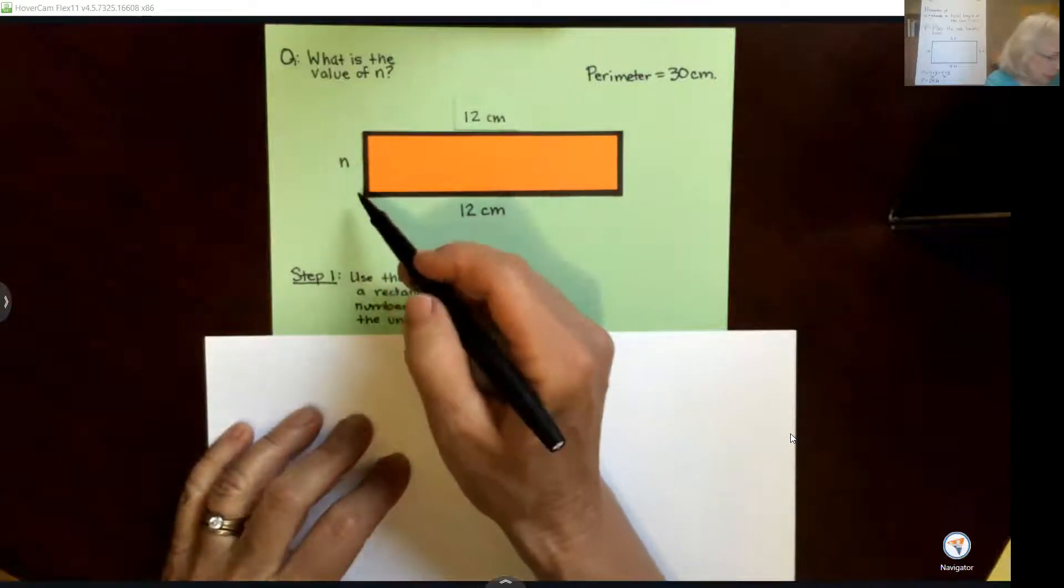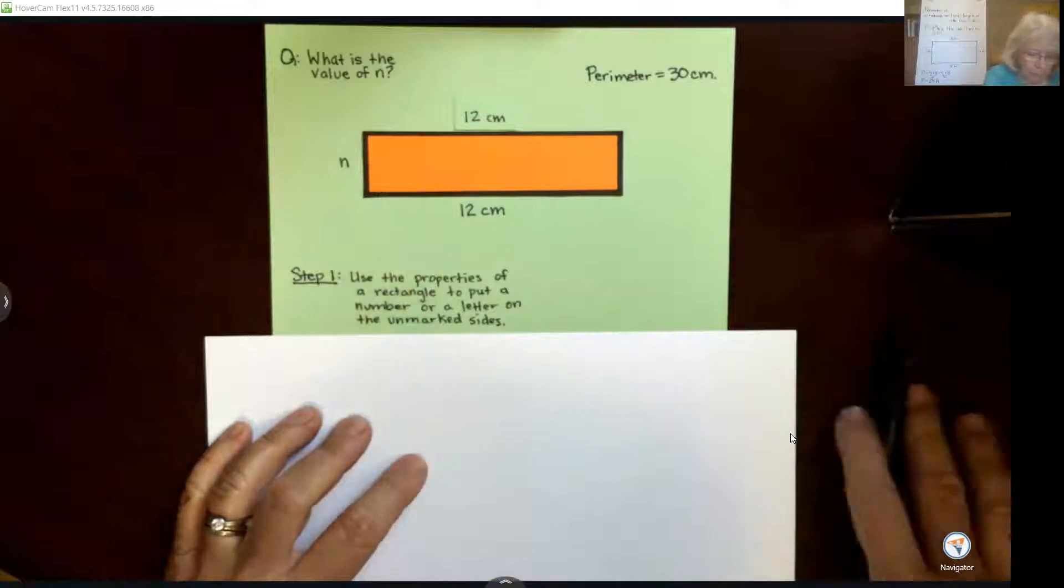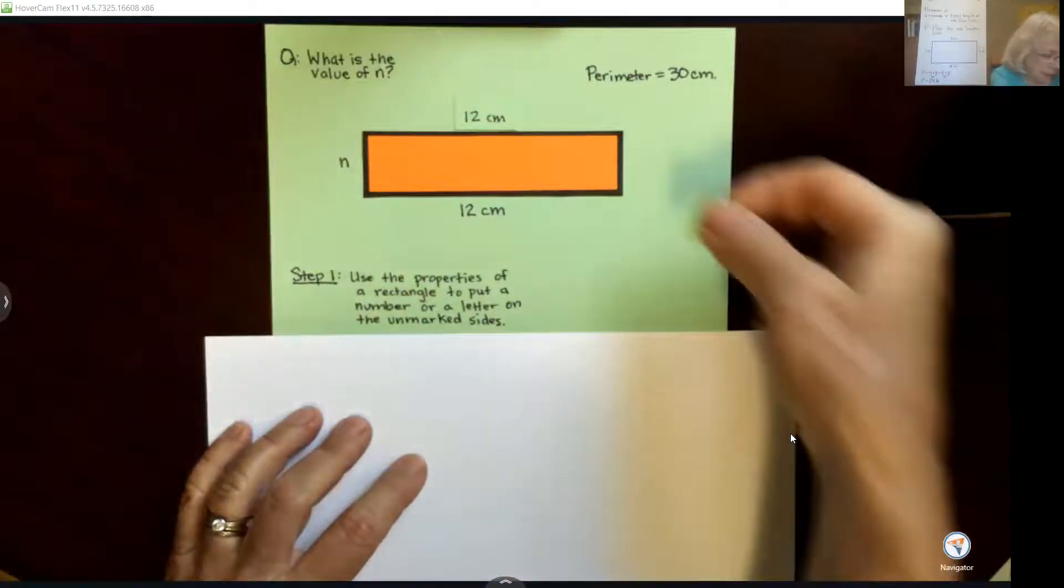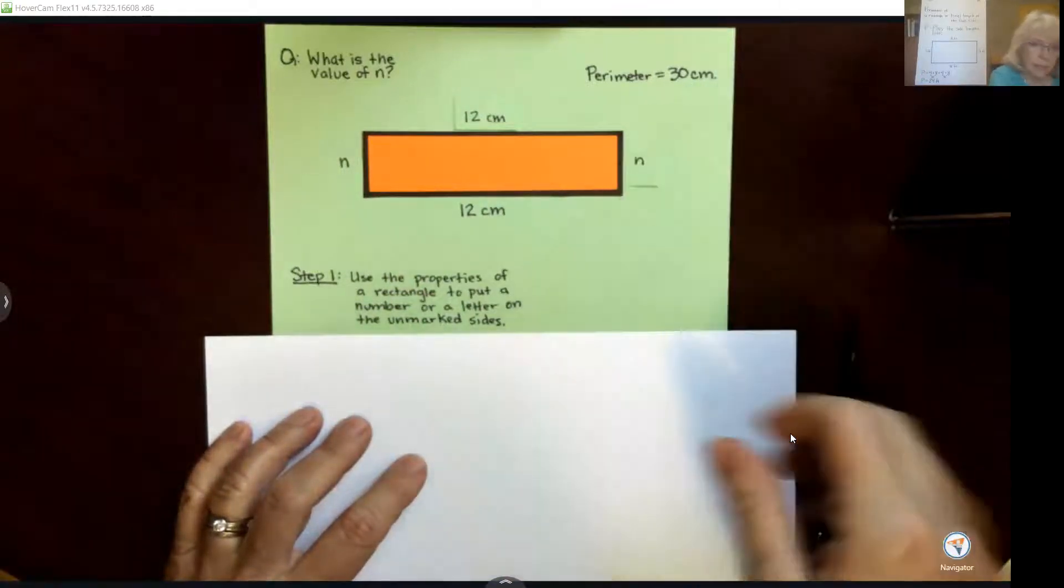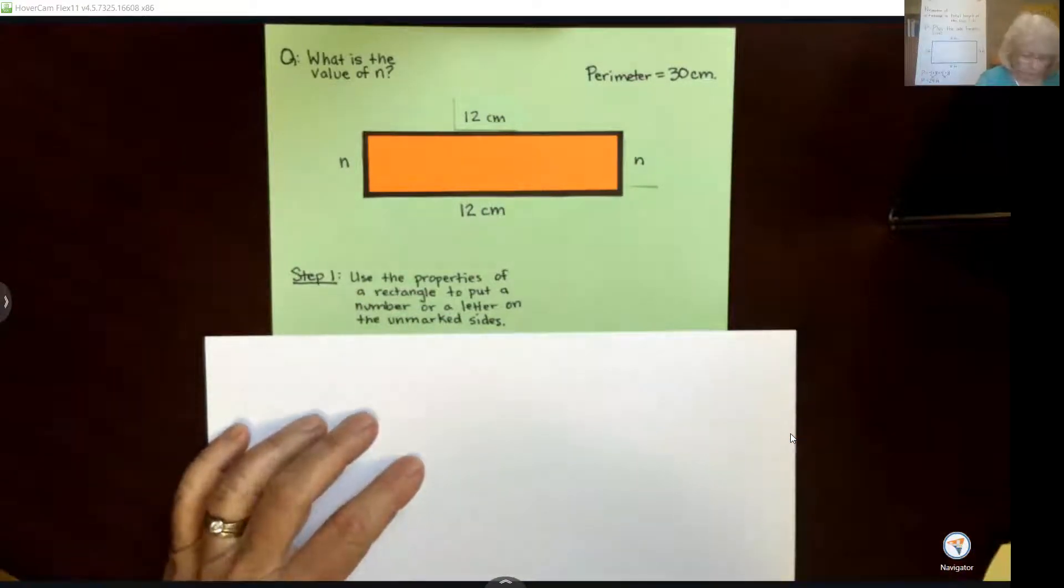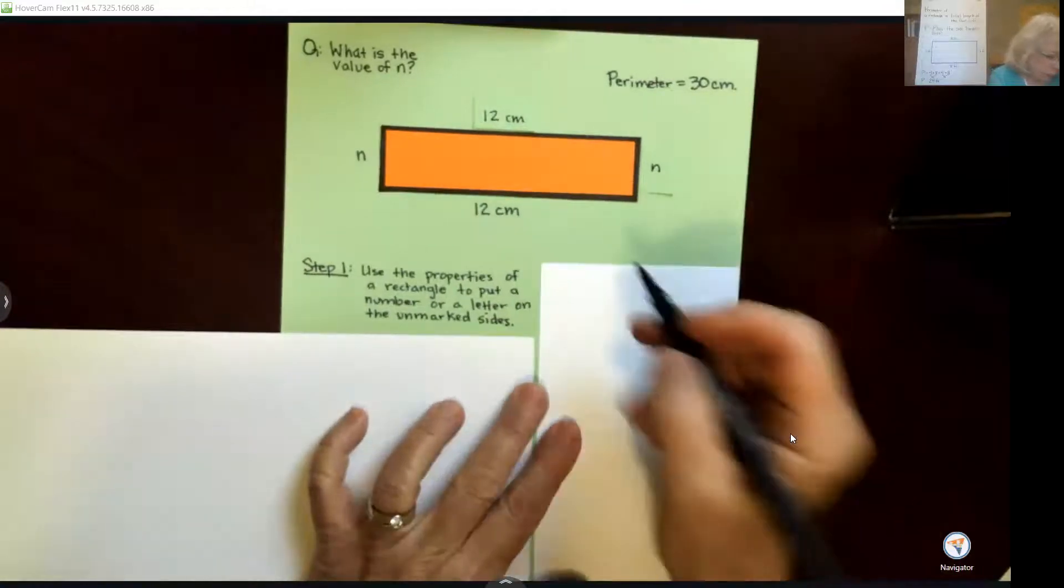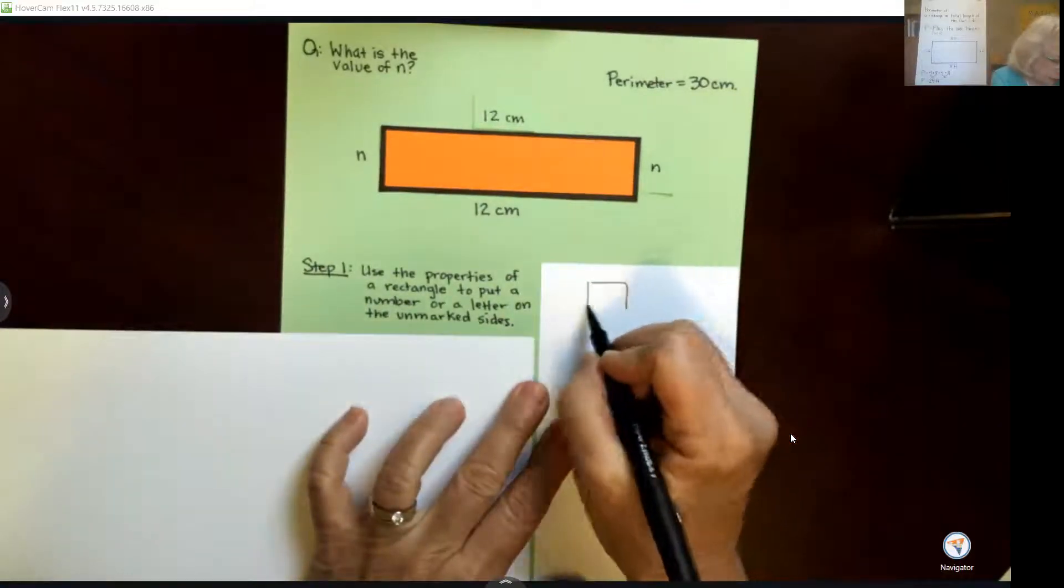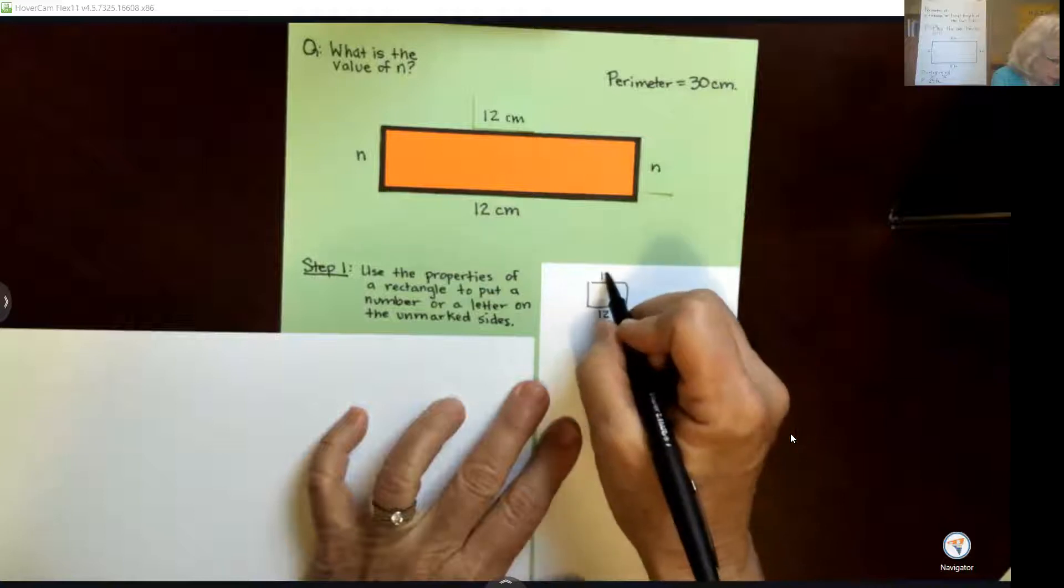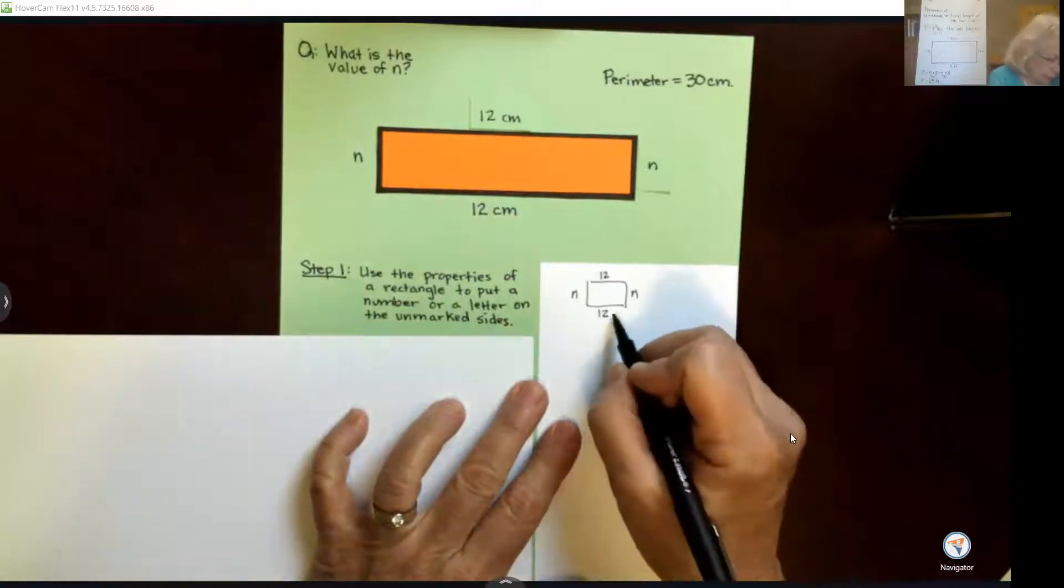So we're going to put that on there. Now the same is true with this unknown number. Whatever this unknown number is, it has to be the exact same number for this side length on this side. So we're going to put that in as n, and if I were doing this on paper here, I might redraw my rectangle just to remind myself and put in my 12, my 12, n and n. Okay, and these are all centimeters.